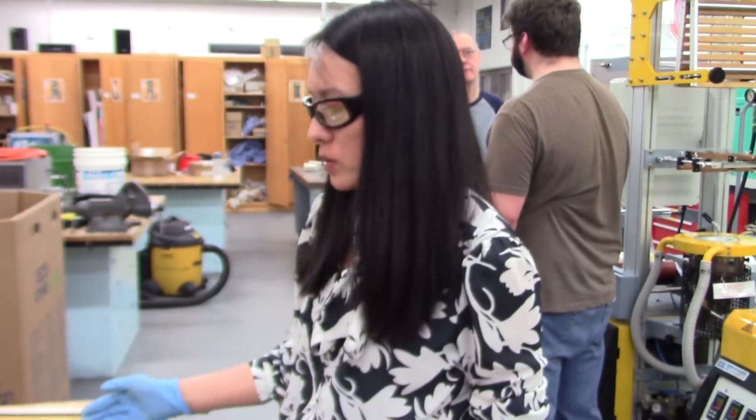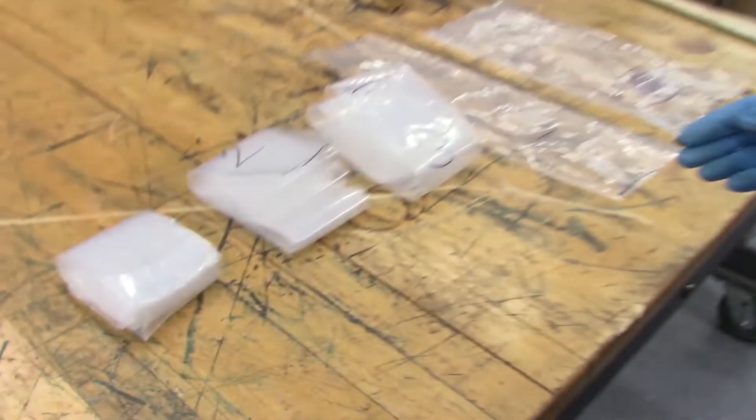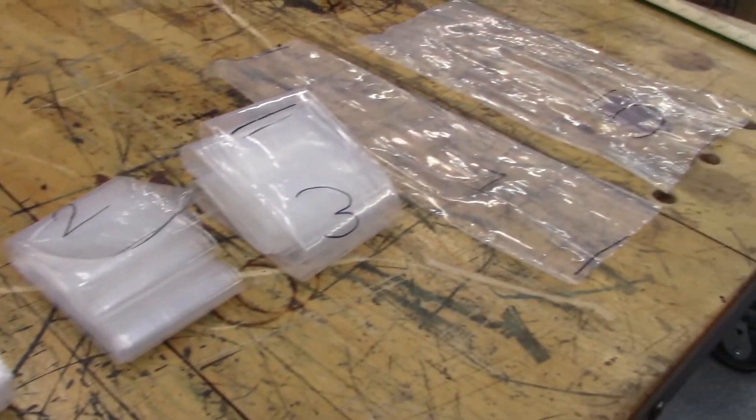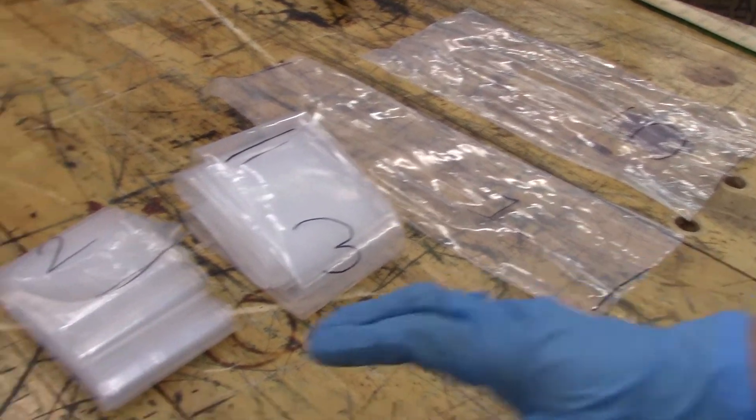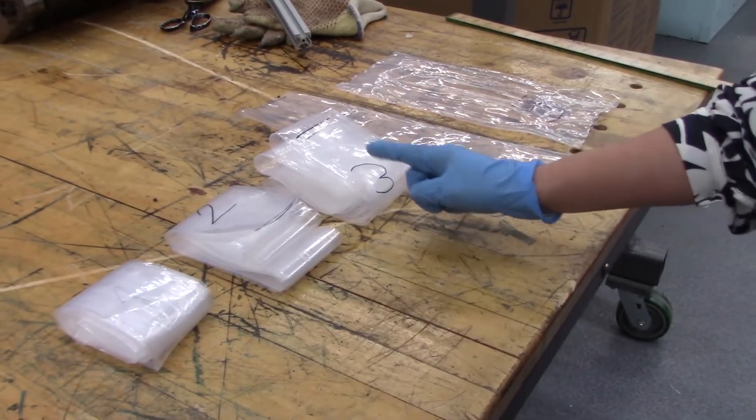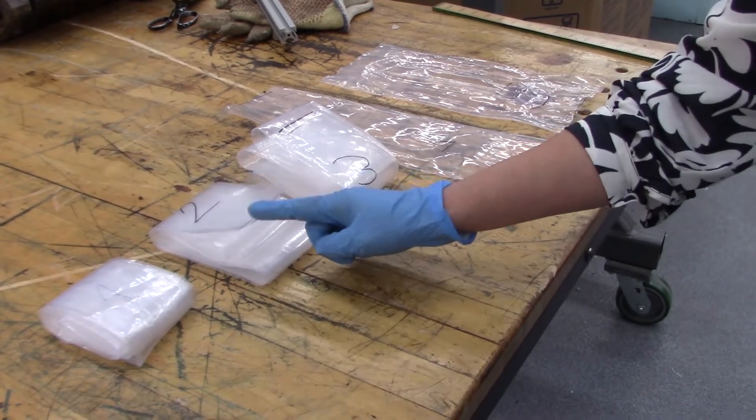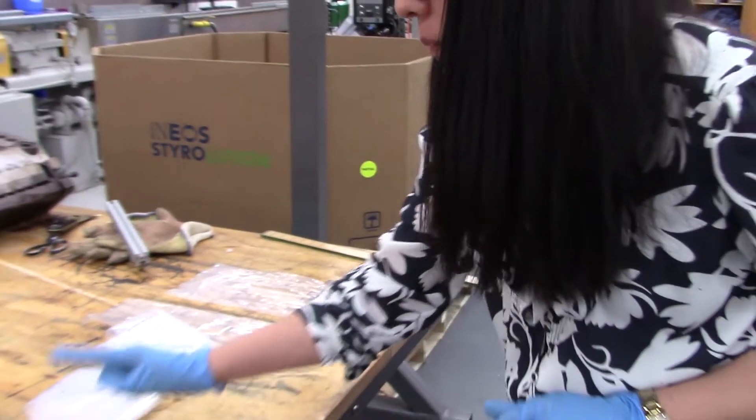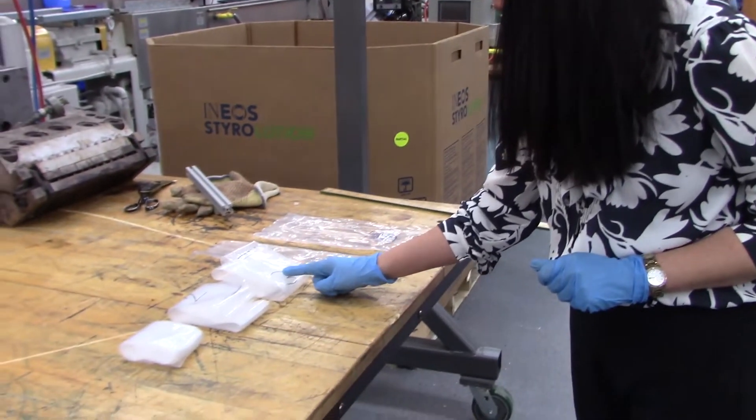This is the blown film sample we just produced during the film blowing process and now we are going to measure the weight of these three samples which we collected at 30 RPM, 45, and 60 RPM.